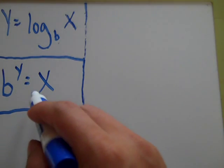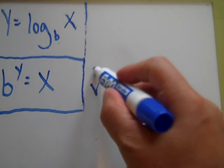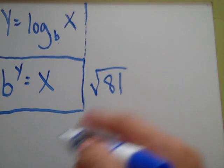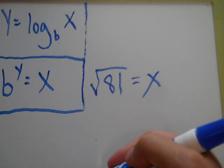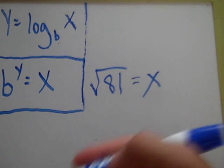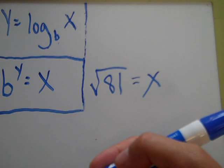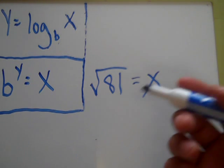So if you've got a problem that looks something like this, where they throw a Mickey in the deck and give you a radical or a square root, and you're like whoa, where's the exponent in that?